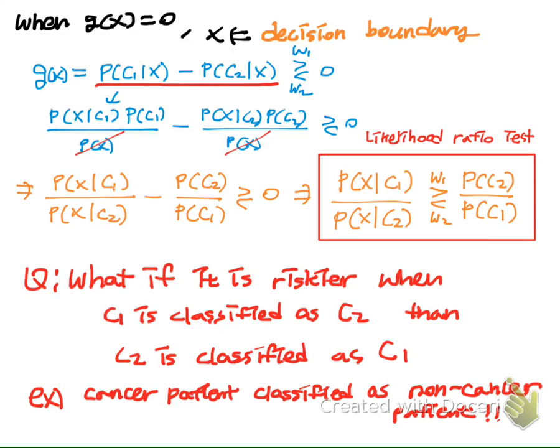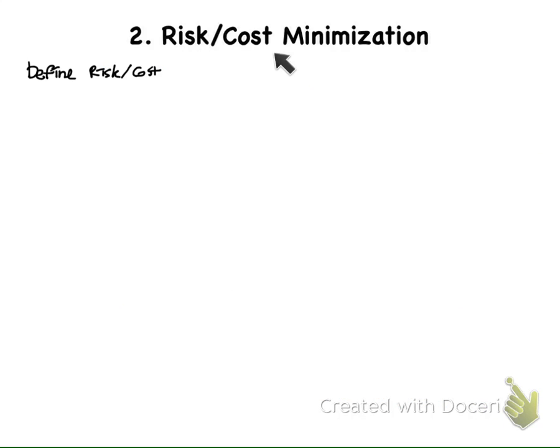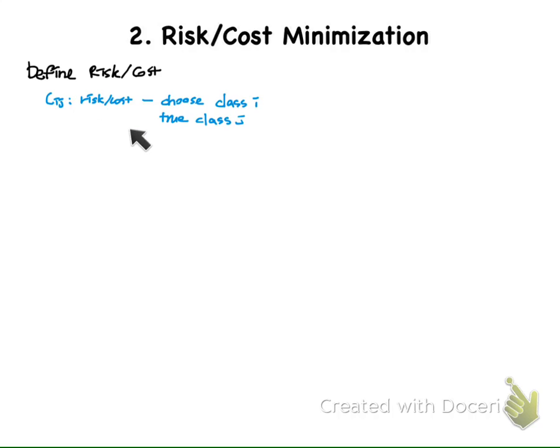Let us look at how we can minimize the risk and cost. We will first define the risk and cost — they are the same concept, but depending on the situation we can choose to call it risk or cost. We define the term Cij as the risk or cost when choosing class i when the true class is j.